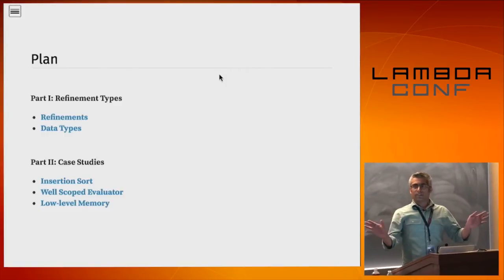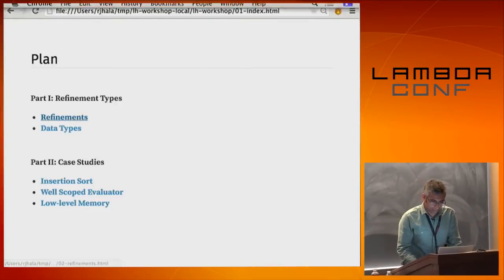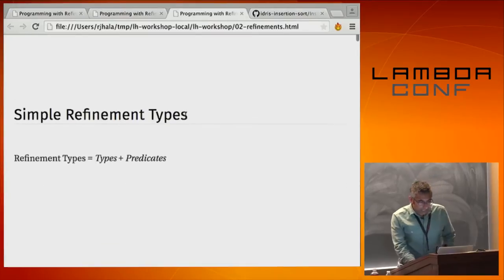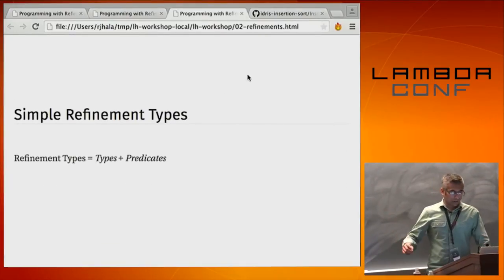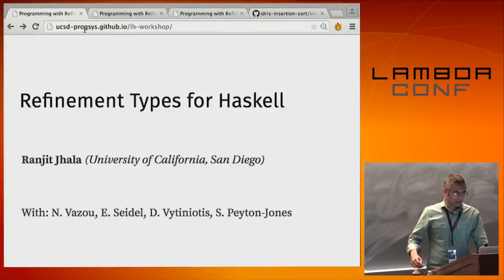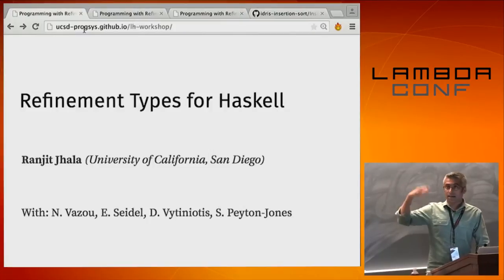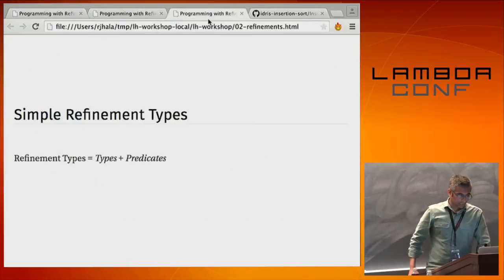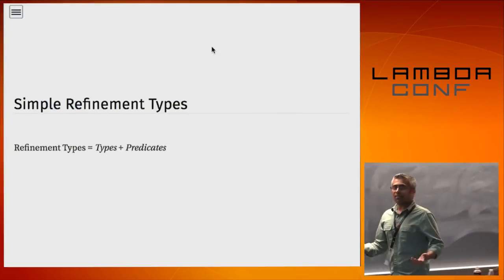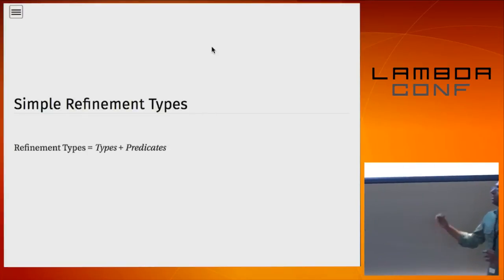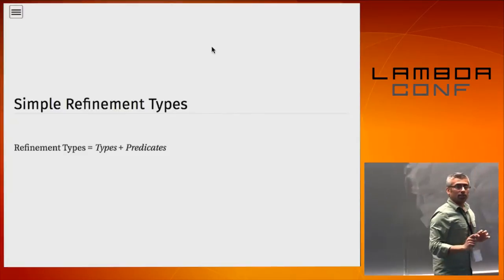So, simple refinement types. Quite simply, for those who just joined — you should go to the URL in the LambdaConf GitHub repo that John sent a link to, and follow along because we'll be doing exercises as we do the talk. What is a refinement type? We're going to take plain old Haskell types and dress them up with logical predicates.